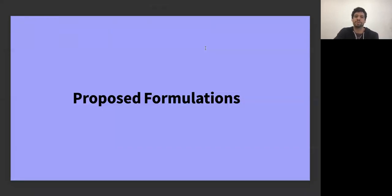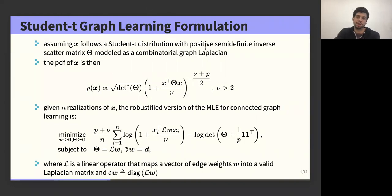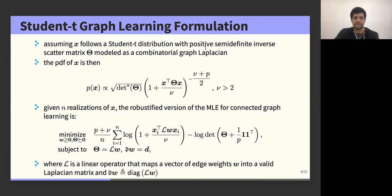So let's see what we propose to estimate Laplacian matrices. We start by modeling the random vector of nodes as a multivariate Student-t distribution, whose PDF is given as follows, where theta is the inverse scatter matrix of the distribution — which is a scaled version of the precision matrix — and nu is a parameter called degrees of freedom, which controls how heavy the tails are. As nu increases, this distribution converges to the Gaussian, and as nu approaches two, the tails get heavier and heavier.